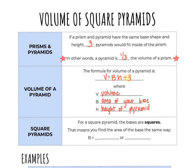Today we're going to focus on square pyramids, which means the base is a square. To find the area of a square, you can either do side times side, or that would be side squared.